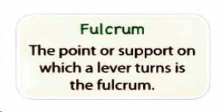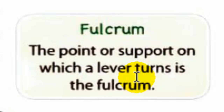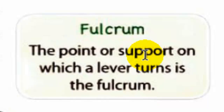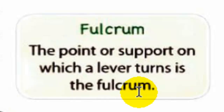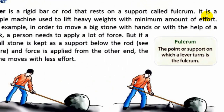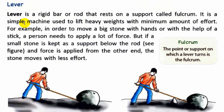The point or support on which a lever turns is called the fulcrum. If you have a simple machine, you can see the effort applied.